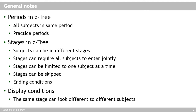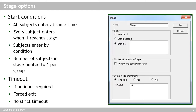You can set the ending conditions for your stages: you can set no time limit, a strict time limit after which everybody is forced out of the stage, or a lenient time limit where the time runs out and people see a warning message without being forced out. Finally, you can use display conditions in boxes to make the same stage look different to different subjects, implementing different screens for different roles within the same stage.